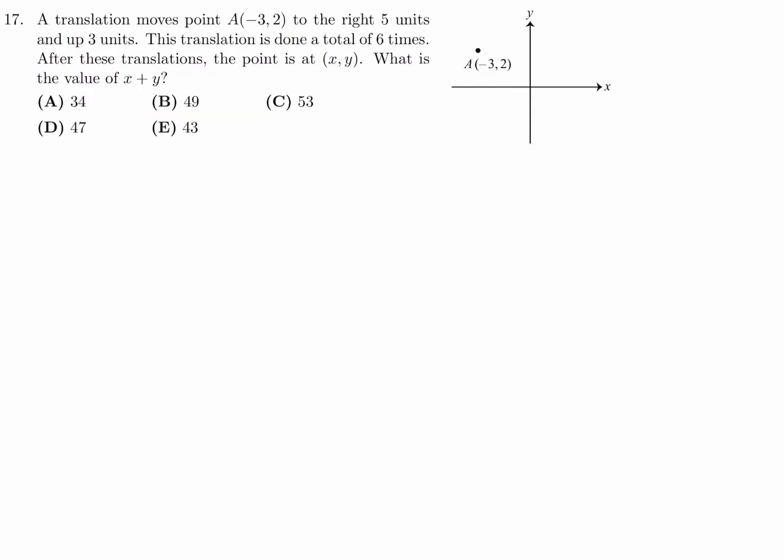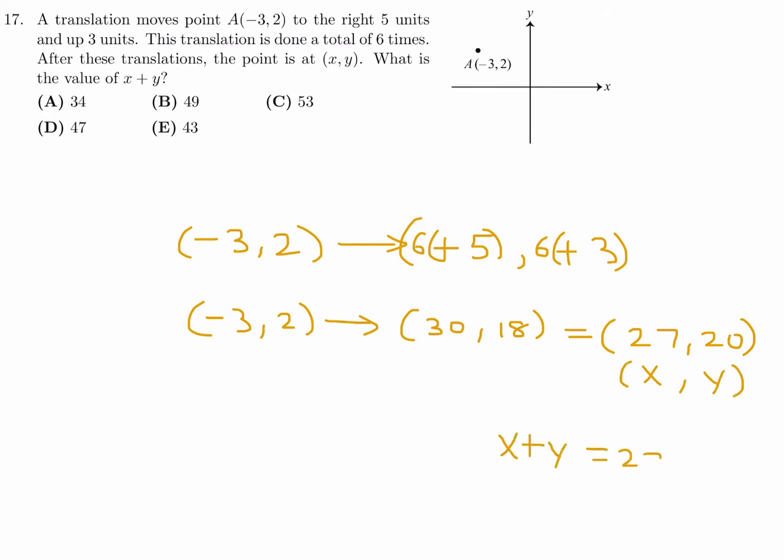A translation moves (-3,2) to the right five units and up three units. This translation is done a total of six times. After these translations, the point is at (X,Y). What is the value of X plus Y? All right. So you're taking this and you're translating it. You're going up five. Five, so the X coordinate goes up by five. And then the Y coordinate goes up by three. But you're doing this six times, so you have to multiply both of these by six. So you're taking (3,2), and then translating it 30 and 18. And when you do that, you get to the point (27,20). And this is representing X and Y. So X plus Y would be 27 plus 20, which is 47. So at number 17, the answer is D.